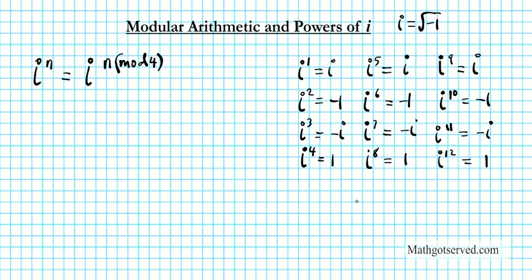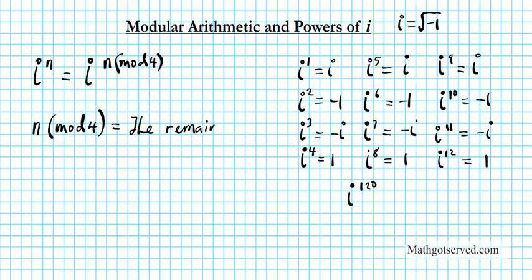So following this pattern you can determine what values like i to the 120 are, but you don't want to write the pattern all the way out to 120 because we don't have time for that. We're going to use the fact that this repeats in a cyclical manner in multiples of 4 to determine higher powers without doing all this work. That brings us to the whole idea of using modular arithmetic to compute powers of i. So what is n modulo 4? Well, n modulo 4 is just a fancy way of saying the remainder after dividing by 4.